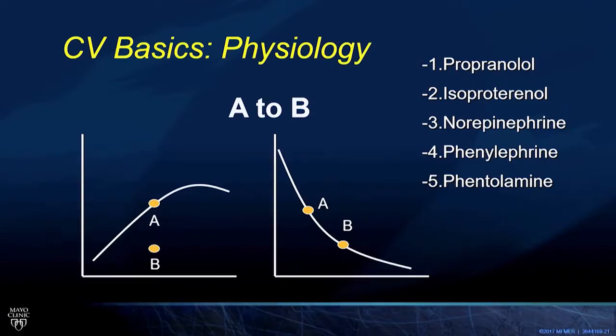The left-hand graph, the Starling curve, is showing that that same change in stroke volume is represented by moving off of the current Starling relationship and onto a lower Starling curve. When you see these two things in combination, this is reflecting a pure change in afterload.